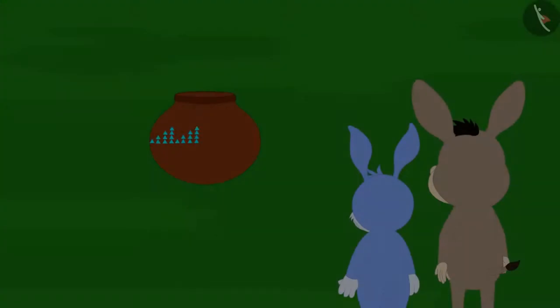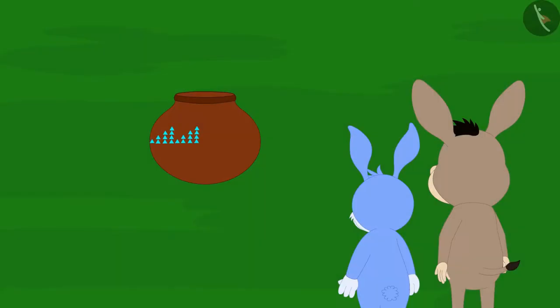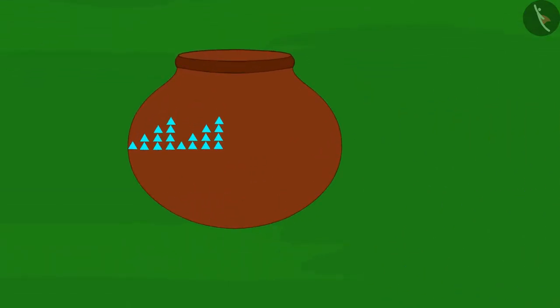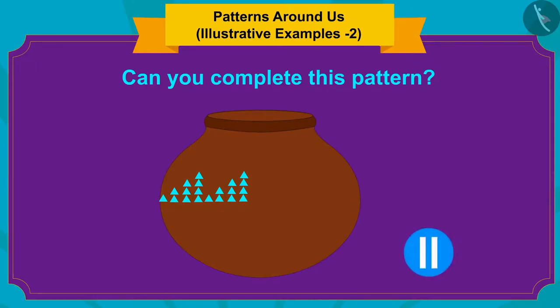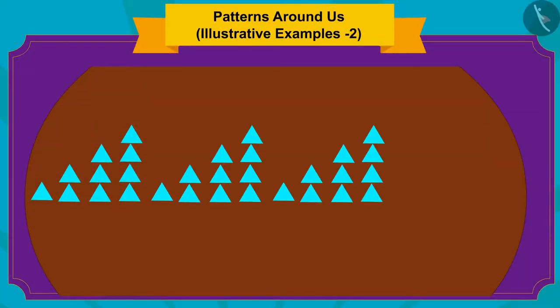This time they saw an earthen pot on the way. Such type of an incomplete pattern is made on the pot. Children, can you complete this pattern? You can find the answer by stopping the video. Well done children!